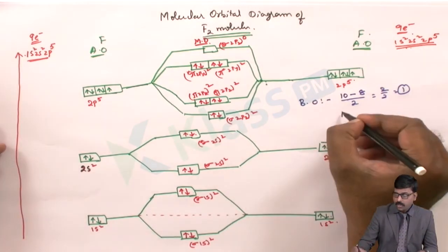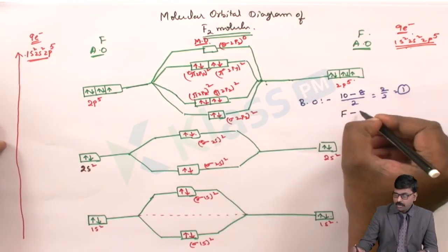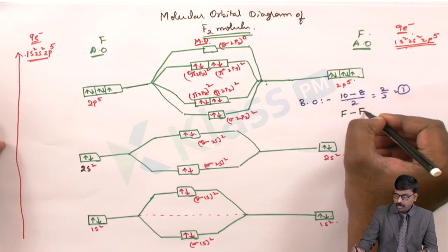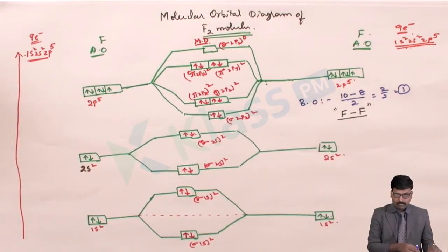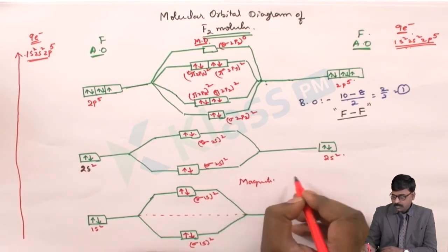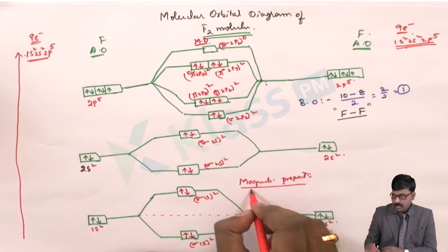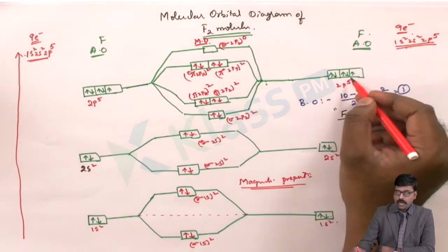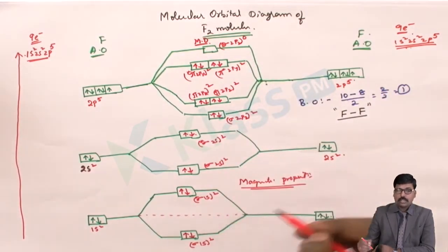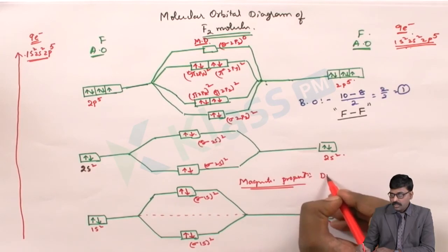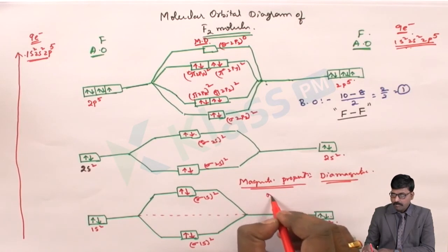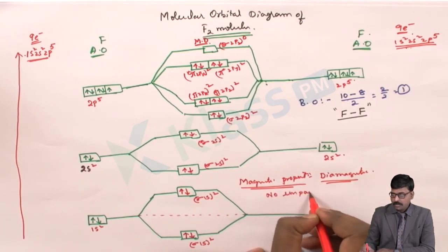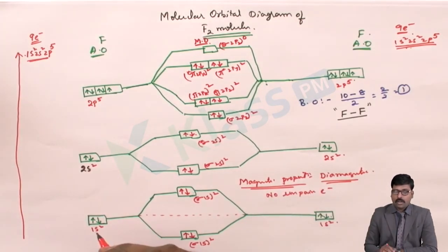Since F2 has no unpaired electrons in its molecular orbitals, the F2 molecule is diamagnetic in nature. In this way, the molecular orbital diagram of F2 is drawn.